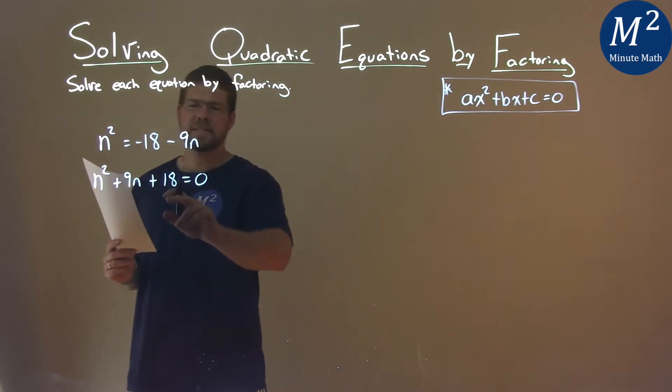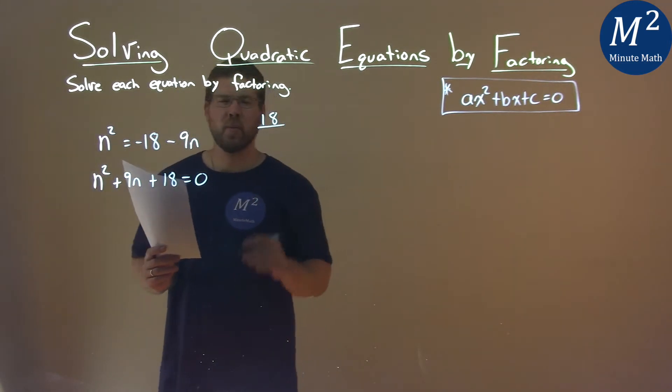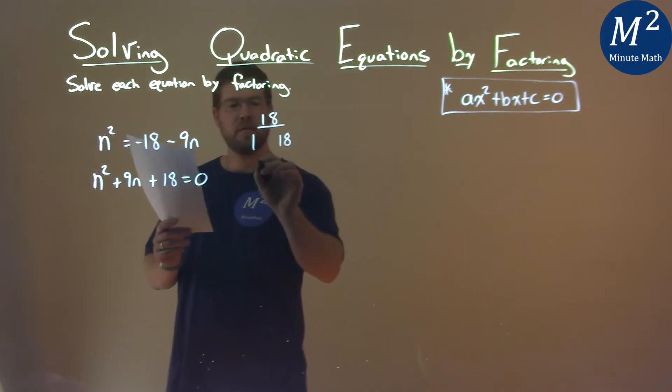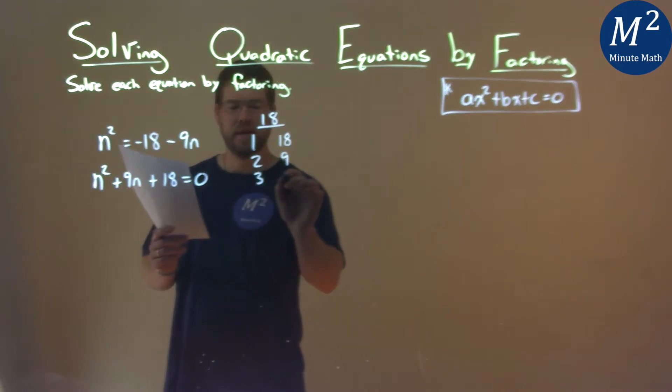Now I look at my c value being 18 and I define what two numbers multiply to be 18. 1 and 18, 2 and 9, and 3 and 6.